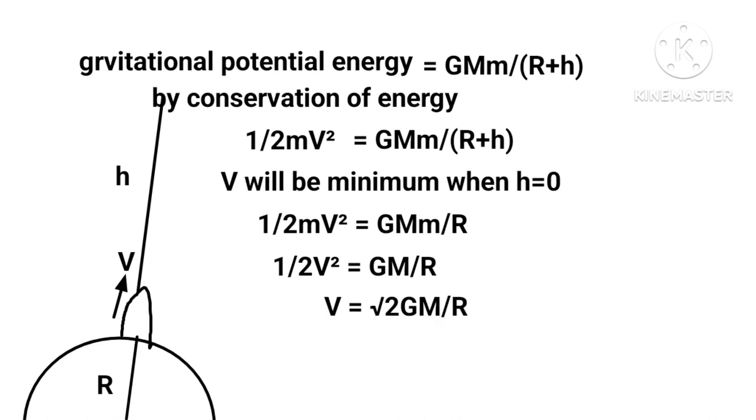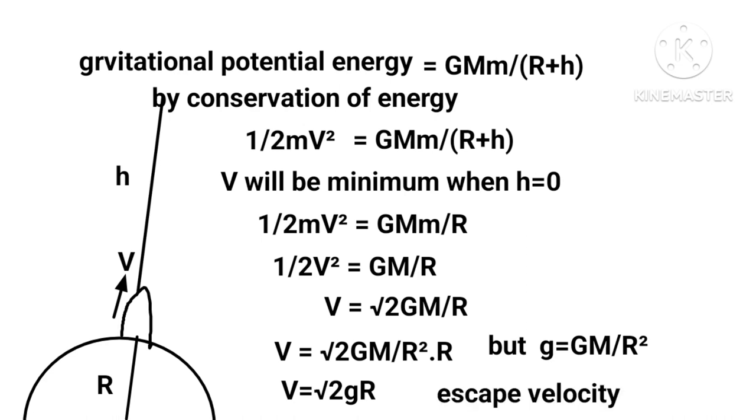Multiplying and dividing by R, we get V equals square root of 2GM upon R squared times R. But on the surface of Earth, g equals GM upon R squared. Hence, V equals square root of 2gR, which is the escape velocity.